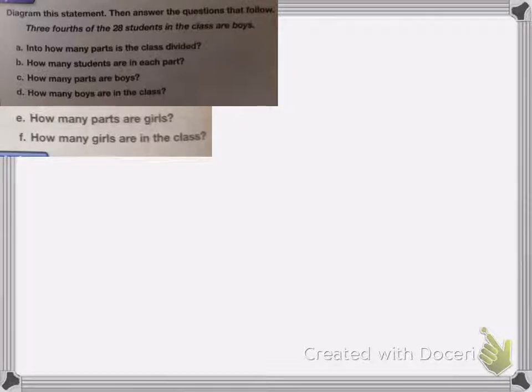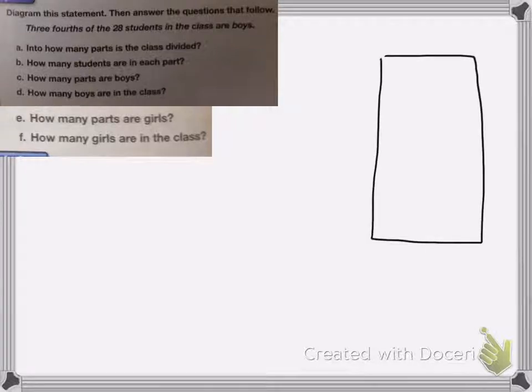So our first step is to diagram the problem, and when we say diagram it means we're drawing our little fraction box over here. Okay, so you figure out how many sections I need to divide this into. Well, it says that three-fourths of the students are boys. So that means I'm going to break up my box into four sections, okay?